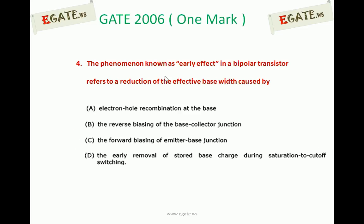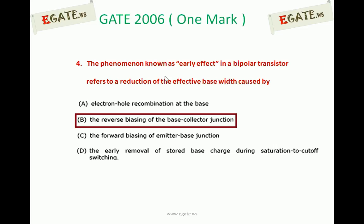The correct answer for this one is B — the reverse biasing of the base-collector junction. We will see the details now.